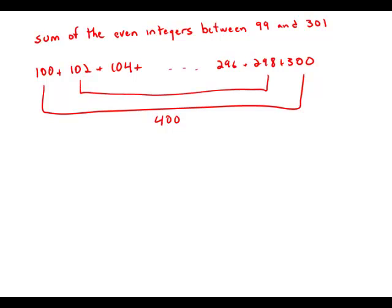Well, then take the next pair, 102 to 298. That also adds up to 400. Then the next pair, 104 plus 296, that also adds up to 400. So you see we can make a bunch of pairs, and each of these pairs will add up to 400.